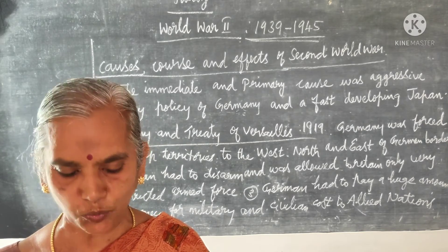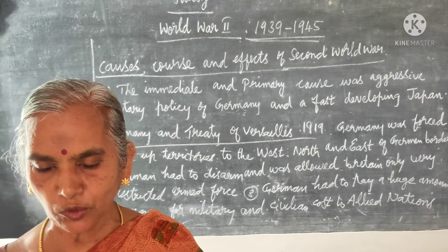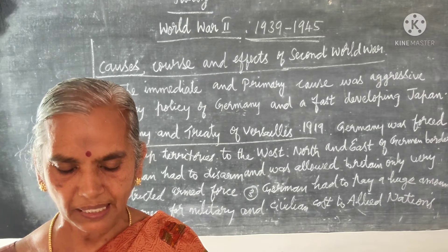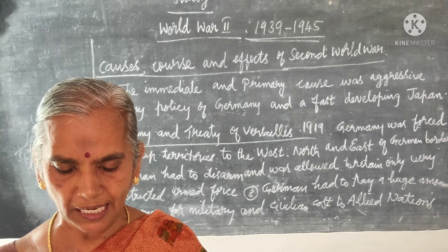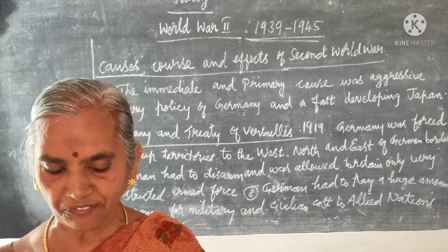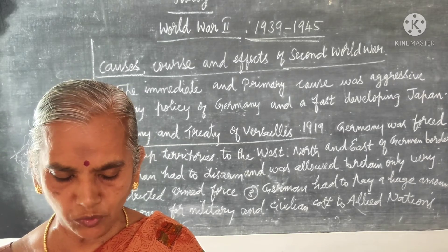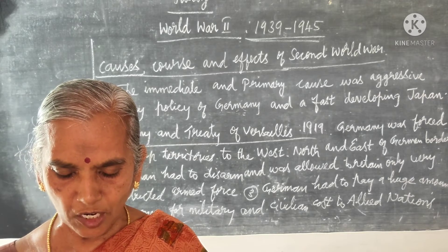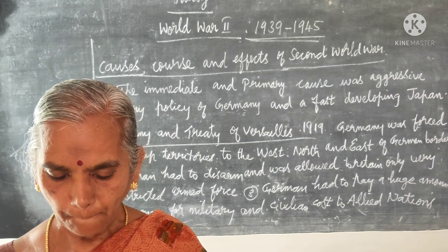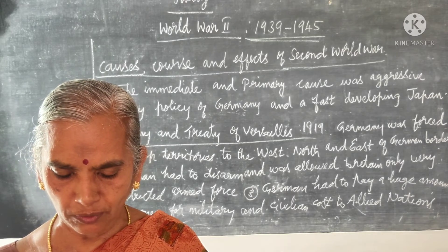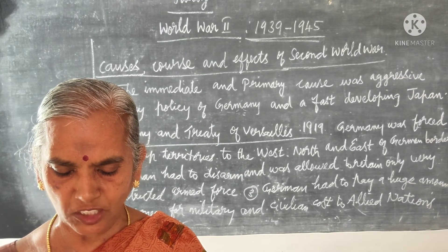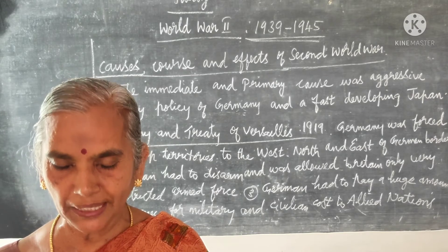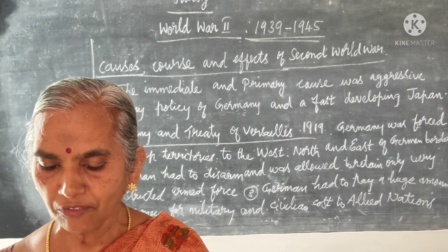Associated organizations deal with areas of critical interest to the world, like food, health, and education. These include the Food and Agriculture Organization (FAO), World Health Organization (WHO), and UNESCO — the United Nations Educational, Scientific and Cultural Organization. Special organizations funded voluntarily by member countries include UNICEF, which promotes children's health and welfare, and UNDP — the United Nations Development Programme, which focuses on development.